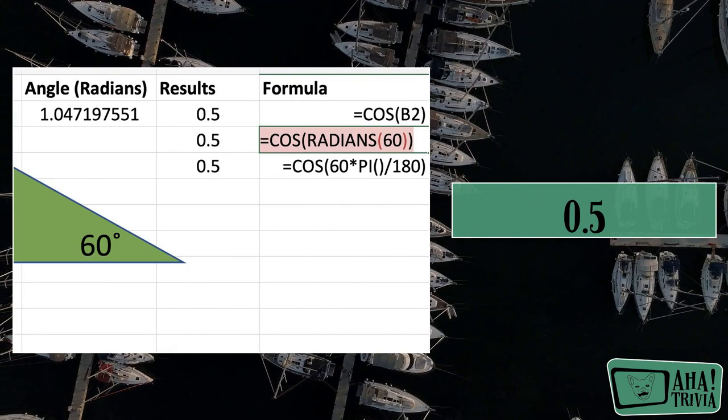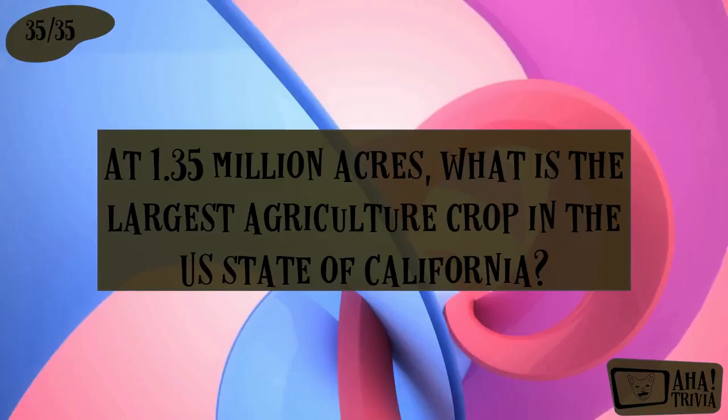At 1.35 million acres, what is the largest agriculture crop in the U.S. state of California?